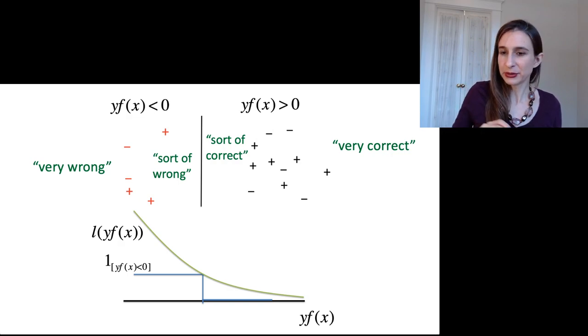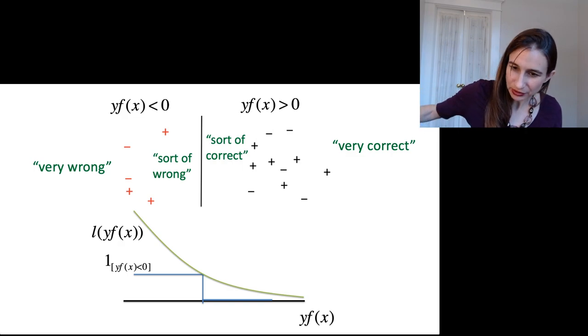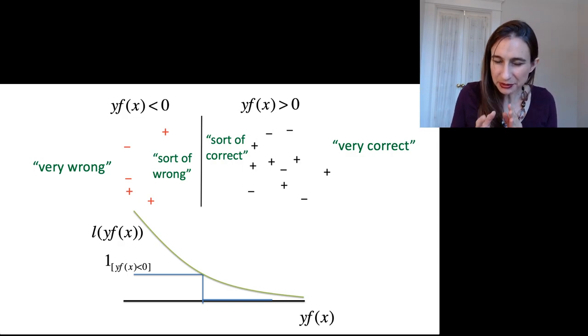And then if you were very correct, you don't lose anything. But if you're somewhere in the middle, if you're near the decision boundary, you still suffer some penalty, because you weren't sure about it, you didn't get it exactly right.